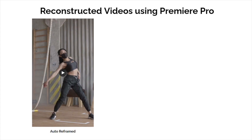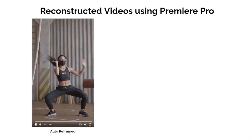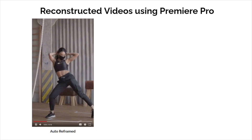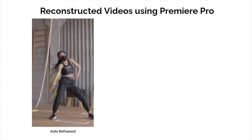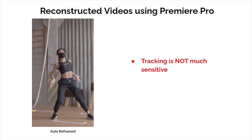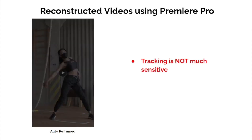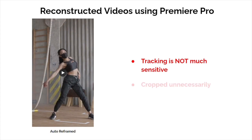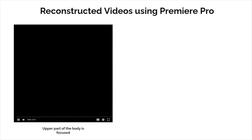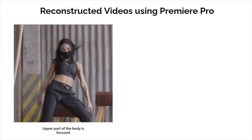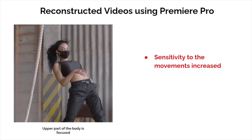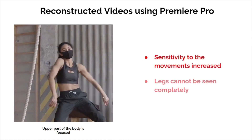We have recreated the reference video in three different ways. First, we try to track the whole body. As you can see in this video, there are several movements, but the tracking is not that much sensible. Also, certain body parts of the dancer are cropped unnecessarily. In the second video, we track the upper part of the dancer. Then the sensitivity to the movements increased, but the movement of her legs is not present.